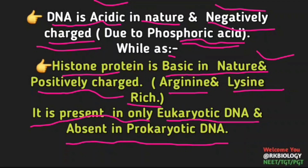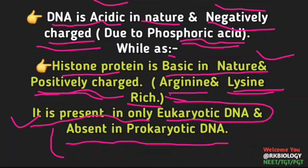Histone protein जो होता है basic in nature का होता है और positively charged होता है, और इसमें arginine और lysine की मात्रा ज़्यादा पाई जाती है। बच्चो, histone protein केवल eukaryotic DNA में पाया जाता है और prokaryotic DNA में absent होता है। ये एक बड़ा difference होता है eukaryotic और prokaryotic कोशिकाओं में। Thanks for watching.